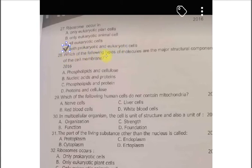Which are the following types of molecules are the major structural components of cell membrane? Option A. Phospholipids and cellulose. Option B. Nucleic acid and protein. Option C. Phospholipids and protein. Option D. Protein and cellulose. The correct one is the B. Phospholipids and cellulose. Next question.